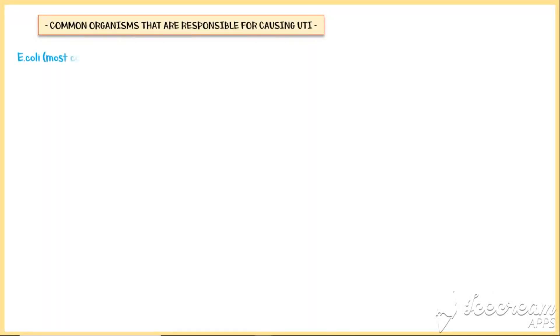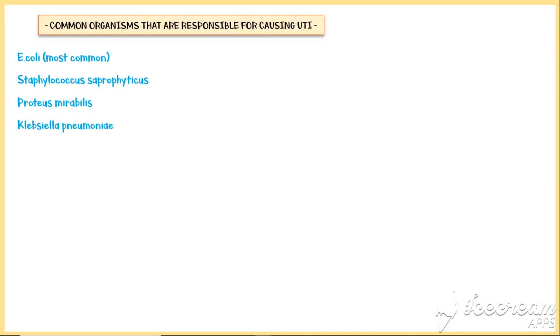Common organisms responsible for causing urinary tract infections include E. coli, Staphylococcus saprophyticus, Proteus mirabilis, Klebsiella pneumoniae, Enterococcus faecalis, and Candida species.